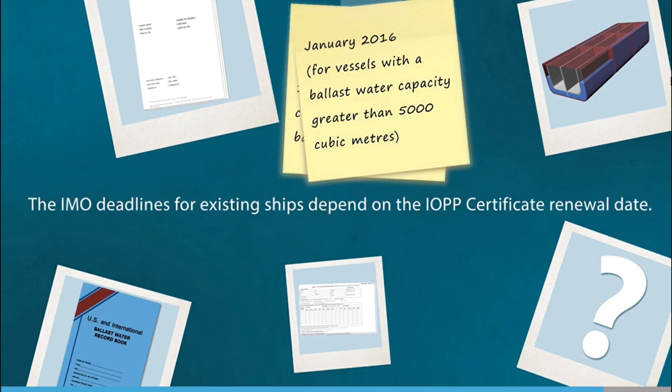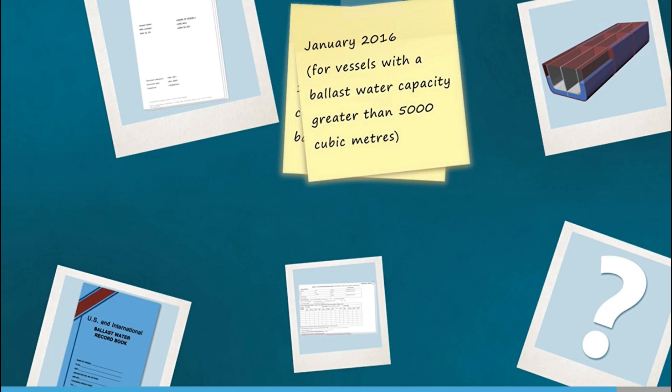The IMO deadlines for existing ships depend on the International Oil Pollution Prevention Certificate (IOPP) renewal date. Existing ships with an IOPP renewal survey before September 2019 must already comply. Those with renewal surveys after 8 September 2019 must meet the D2 standard by their next renewal survey date. All ships must meet the D2 standard by 8 September 2024.